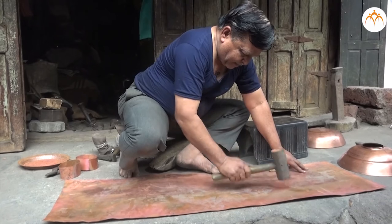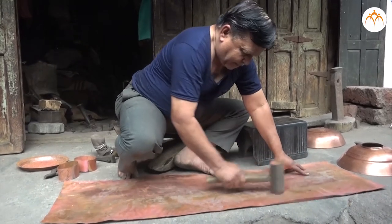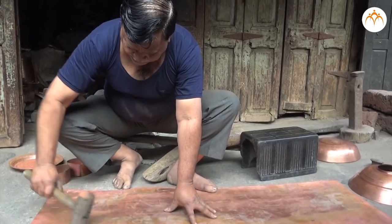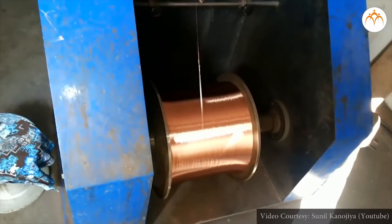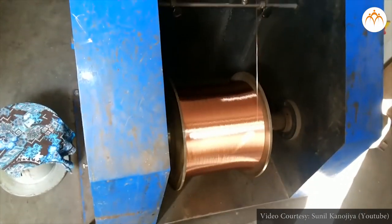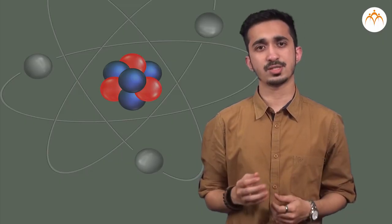Third, malleability. Metals have the ability to withstand hammering and can be beaten into thin sheets or foil. Example: sheets of aluminium foils. Fourth, ductility. Metals can be drawn into thin wires. For example, copper wires, silver wires.